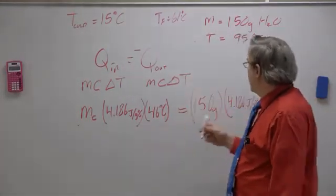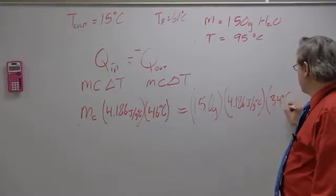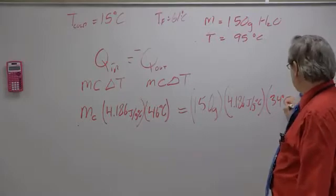And if I want to bring 95 degree water down to 61 degrees, I need to cool that water by 34 degrees Celsius. That's probably better. Degrees Celsius.